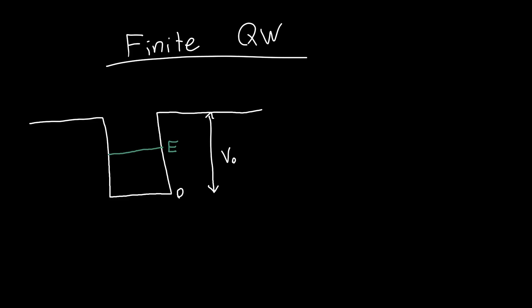We don't know what this energy is, but we'd like to figure it out. We said that the wave functions on the left-hand side or right-hand side, just by looking at the differential equation — where the second derivative of psi equals some coefficient squared times psi — I called this alpha on the left and right-hand side, and k in the middle. In this region, the wave function looked like a·e^(+αx) + b·e^(−αx).